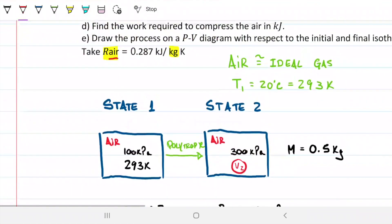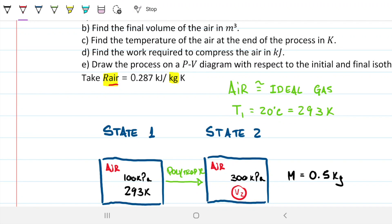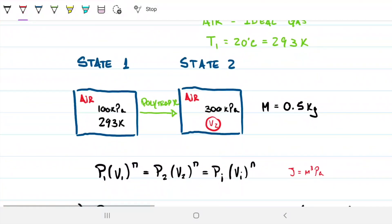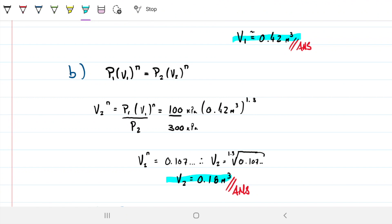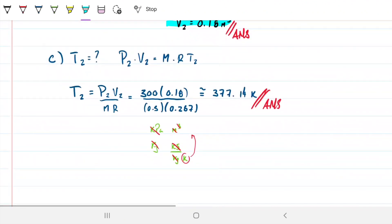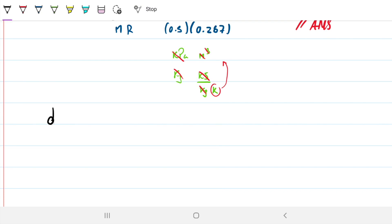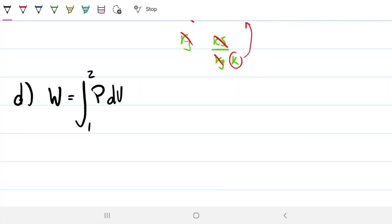Part D: find the work required to compress the air. We're going from 100 to 300 kPa, so we are indeed compressing this air. We know that as long as there's a change in volume, there will be work involved - energy used in form of work. We know there's a change in volume because we calculated V₁ and V₂. So let's calculate the work required to go from state 1 to state 2. We know work is defined as the integral of PdV as we go from one state to the next. Now there are two ways: you can memorize the equation for a polytropic process, or you can remember the fundamentals and work your way through it. Let's do the latter.